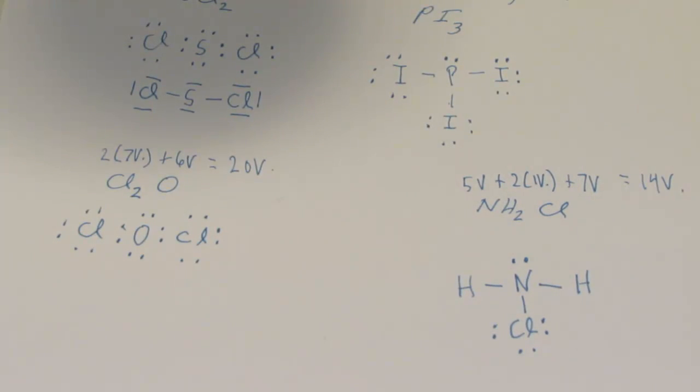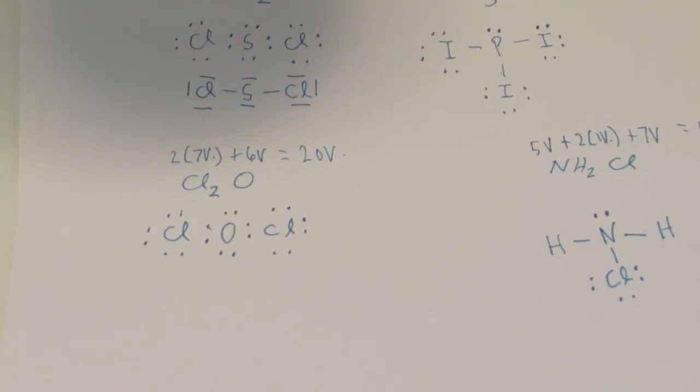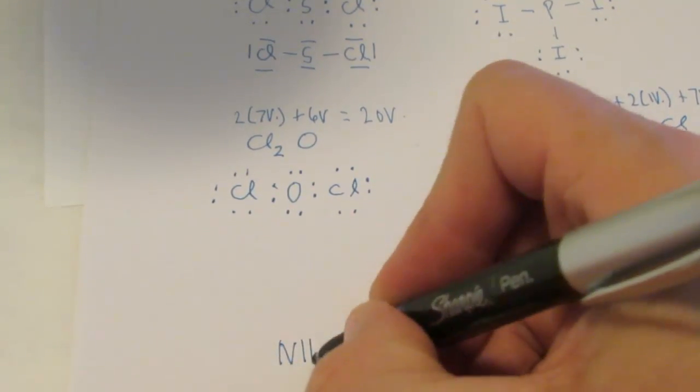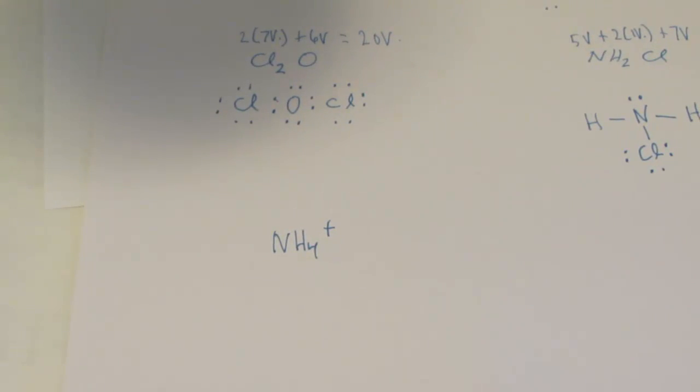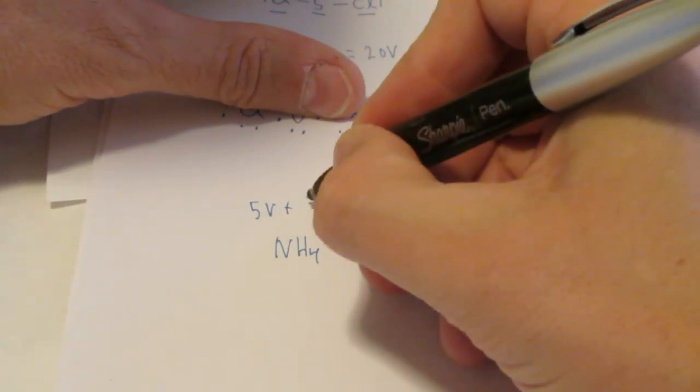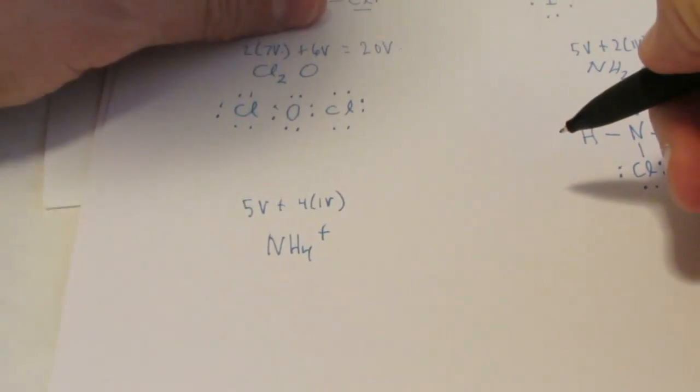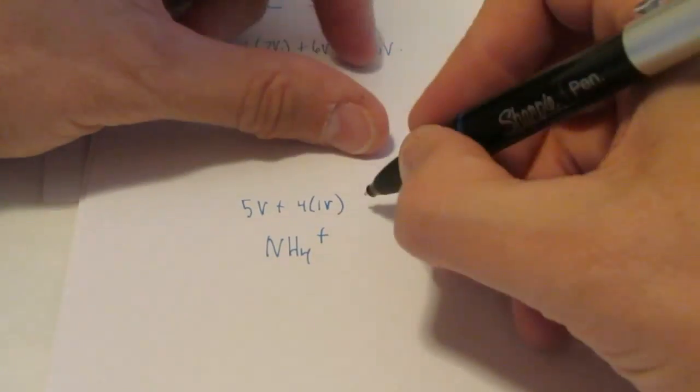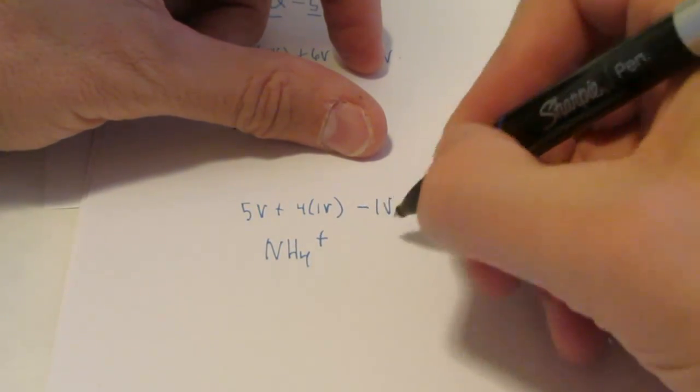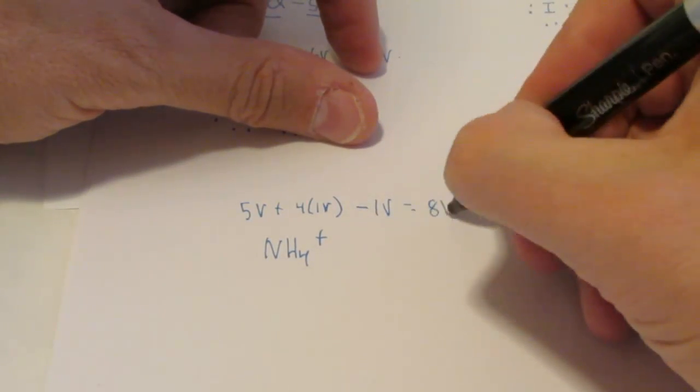We have some time. Let's do a few more. Let's do an ion. Let's do NH4 plus. So we have an ion here. Nitrogen has five valence. Each hydrogen has one valence. And what do I do with that positive sign? That means it's a positive ion. It's lost an electron to do that. So I'm going to take one away from the total because of that positive ion. So I have eight valence to work with.